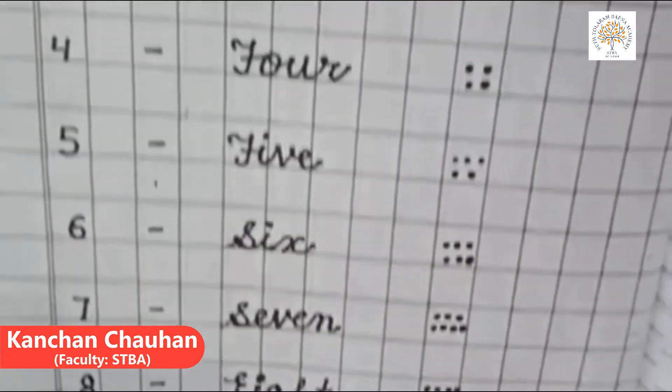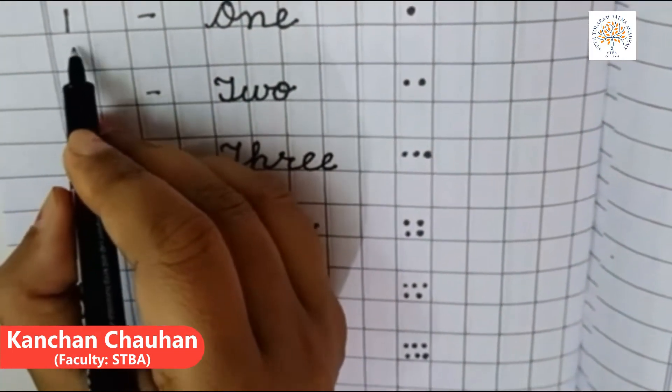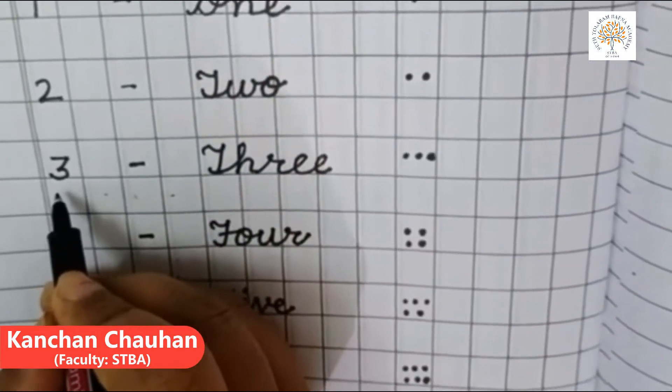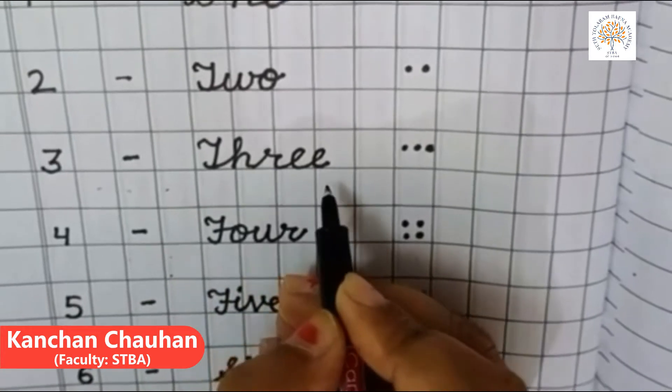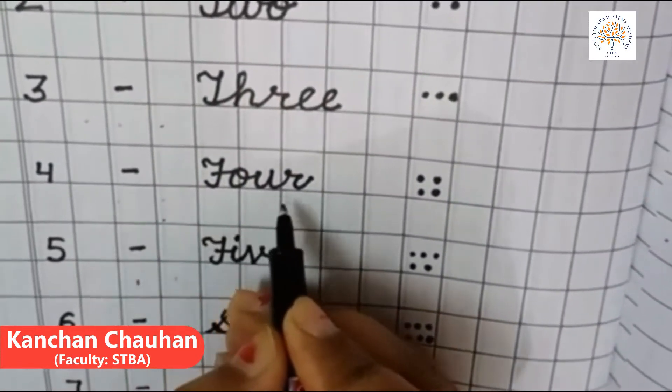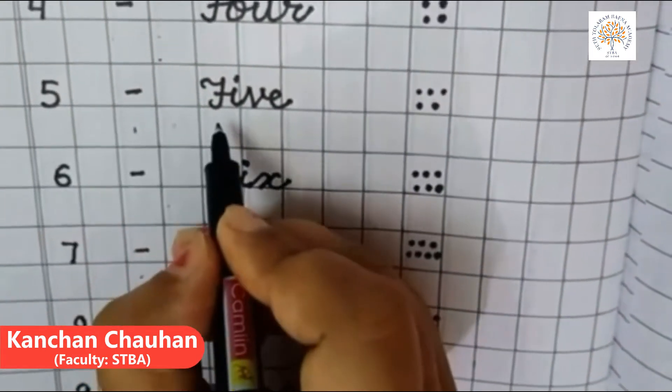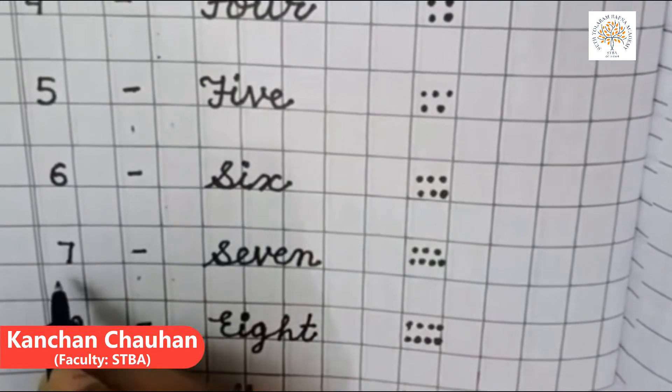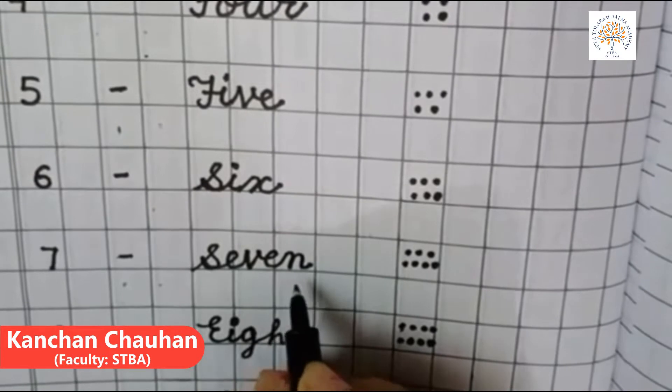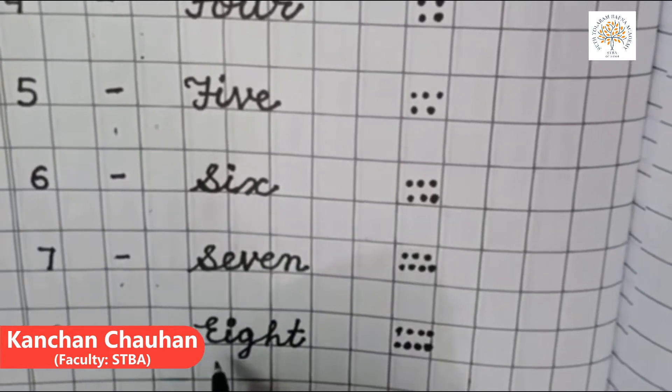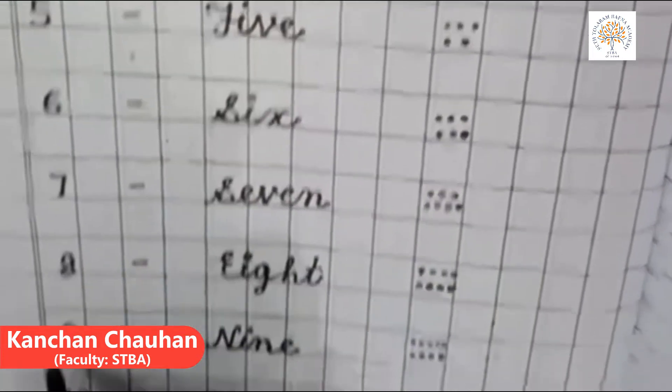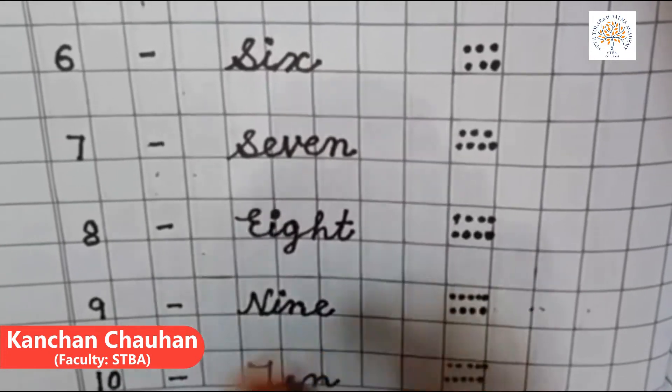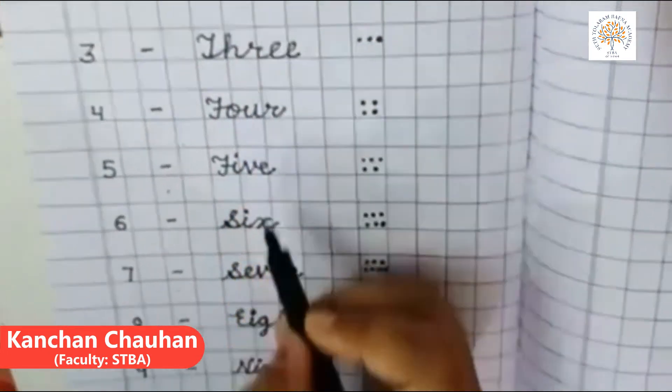Let's repeat. 1, O-N-E-1. 2, T-W-O-2. 3, T-H-R-E-E-3. 4, F-O-U-R-4. 5, F-I-V-E-5. 6, S-I-X-6. 7, S-E-V-E-N-7. 8, E-I-G-H-T-8. 9, N-I-N-E-9. 10, T-E-N-10. Now, these are numerals and these are their number names.